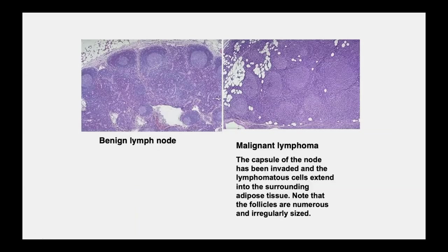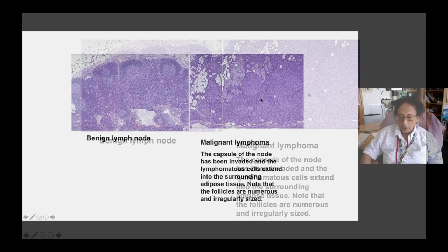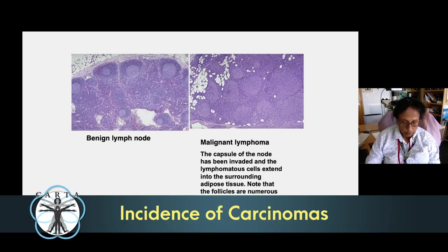Lymphomas are an example of malignancies where lymphoid cells have proliferated and formed large and small follicles, infiltrating into surrounding adipose tissue. Lymphomas are the kind of malignancies that most other vertebrates get — even rodent models, as they age, end up getting lymphomas — but carcinomas are pretty rare.